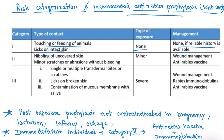In Category 2, there is nibbling of uncovered skin and minor scratches or abrasions without bleeding. The important point is there is no bleeding in category 2, so the type of exposure is minor. Management includes wound care and anti-rabies vaccine — no passive immunization in category 2.